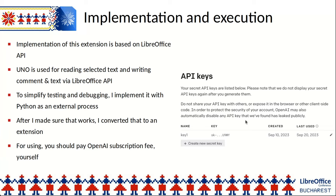Implementation and execution. The implementation of this extension is based on the LibreOffice API. LibreOffice API, or UNO, is used for reading selected text and writing text and comments. To simplify testing and debugging, I first implemented it with Python and ran it as an external process. After I made sure it worked, I converted it to an extension. I have installed the AI extension in LibreOffice and can see the menus in LibreOffice Writer. Unfortunately, to use it you should prepare a ChatGPT API key yourself.